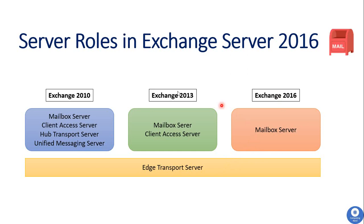In all Exchange versions, the Edge Transport Server role is optional for your organization and it depends on your requirement whether you want to install this role or not. This Edge Transport Server role provides anti-spam and anti-virus functionality for your emails. In Exchange 2016, the Mailbox Server role performs all the functionality of the Client Access Server role, the Hub Transport Server role, and the Unified Messaging Server role as well, which were present in previous versions of Exchange Server. To check more detail about server roles in Exchange 2016, please check my separate video on it.